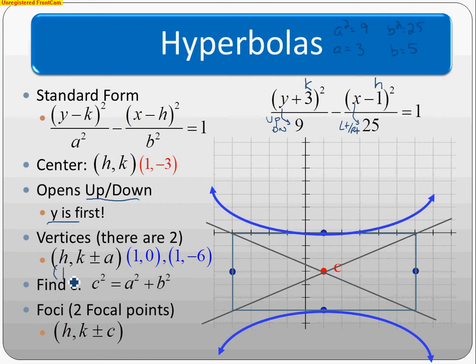Or follow along with the formula: H=1, K=-3, plus and minus A=3. So -3+3=0, and -3-3=-6. That's how we get vertices (1,0) and (1,-6).